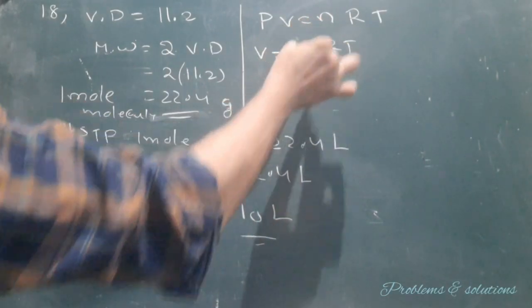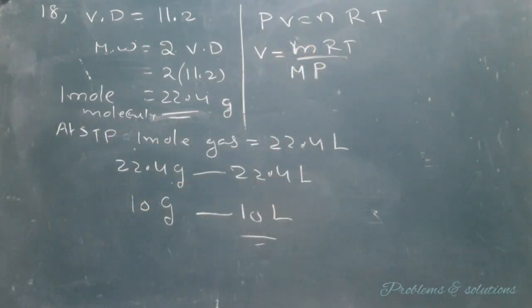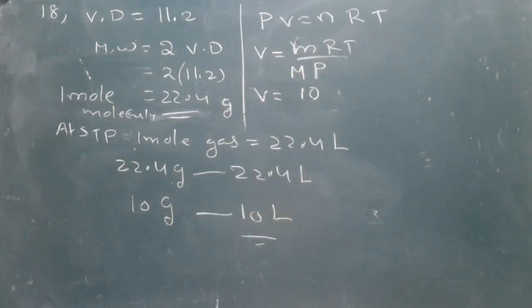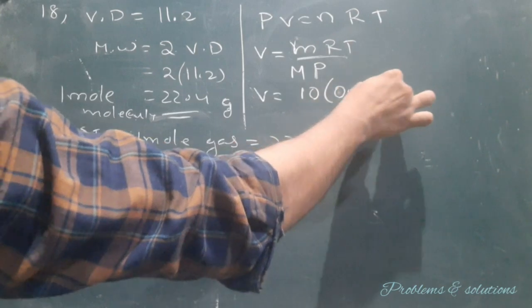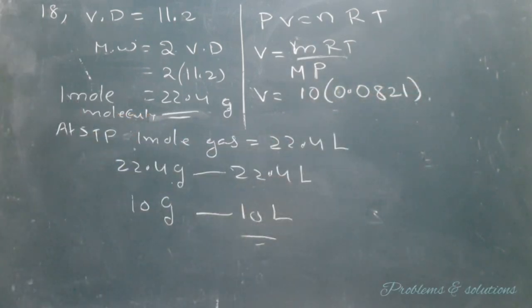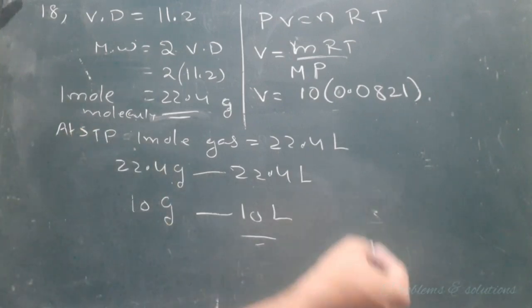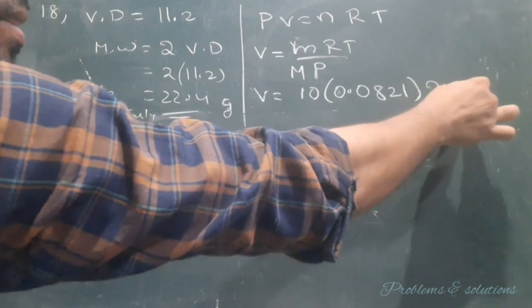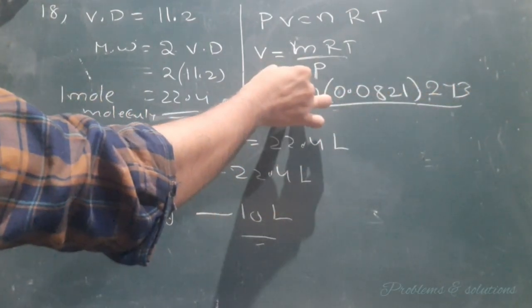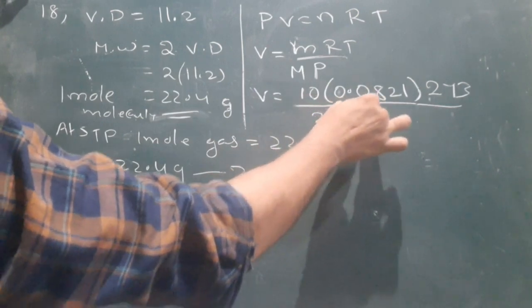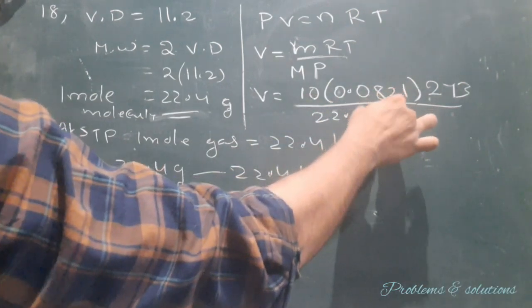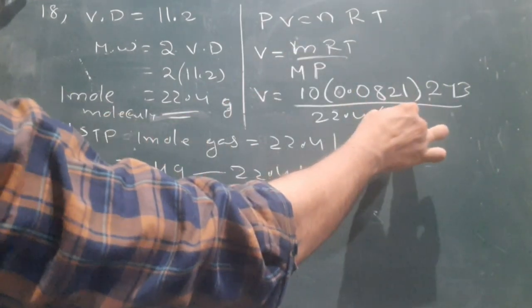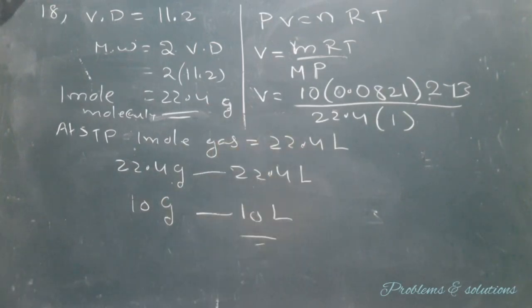So V equals the given amount of the gas, 10 grams, times R equals 0.0821, into temperature at STP, that is 273 Kelvin, by molecular mass 22.4, into pressure at STP, which is 1 atm. So if you calculate this one...